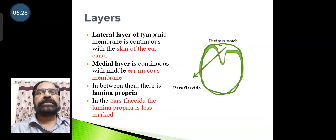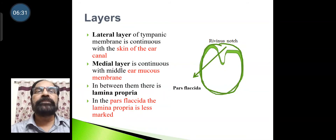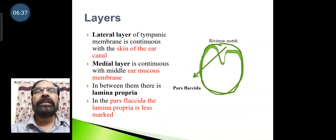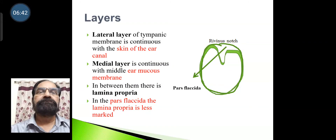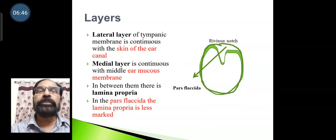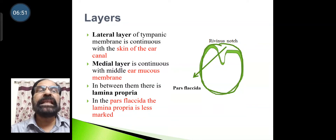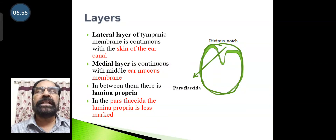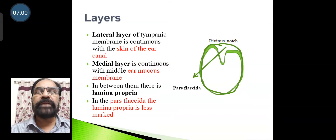Layers of the tympanic membrane: The lateral layer is continuous with the skin of the ear canal (external acoustic meatus). The medial layer is continuous with the middle ear mucous membrane. In between there is the lamina propria. In the pars flaccida, the lamina propria is less marked and of lesser strength.